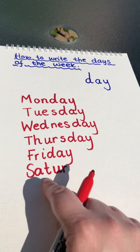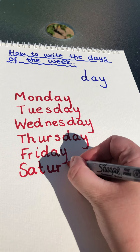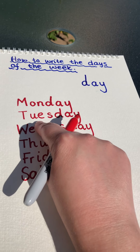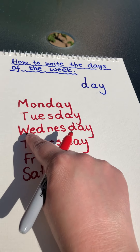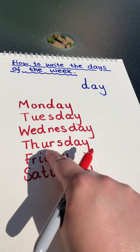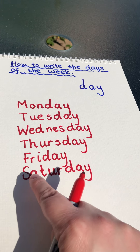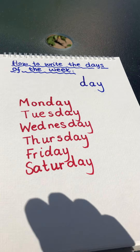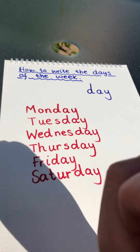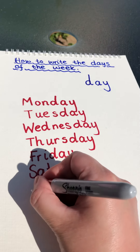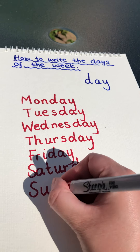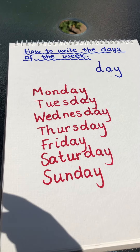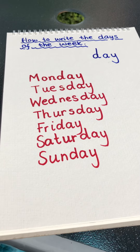Then comes Saturday — and the last one is Sunday. We like to do an action for Sunday to remind us that it's 'sun-day.' So those are all of the days of the week and they all end in 'day.'